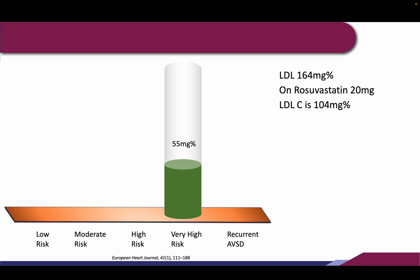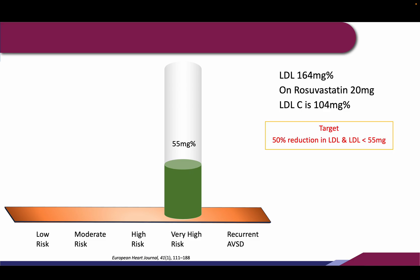From an LDL of 164 down to 55 is a long journey and not achievable with a small drug dose. A high intensity statin was started — rosuvastatin 20 mg — but his LDL only came down to 104. Despite lifestyle modification and high intensity statin, LDL has still not reached the goal of 55. The options are: increase rosuvastatin to 40 mg, though this would only make about a 10% further difference.